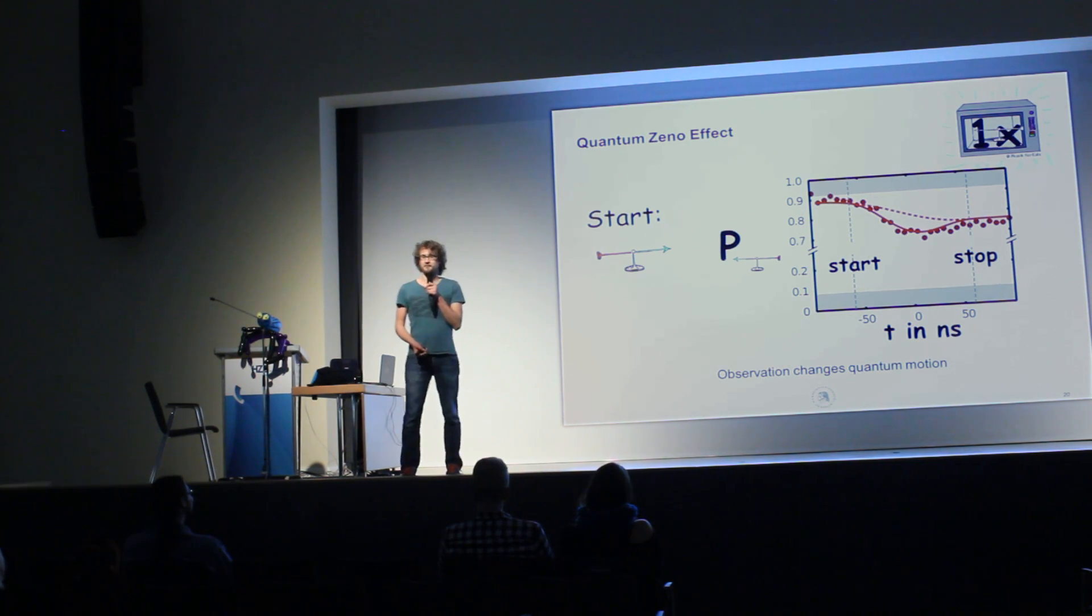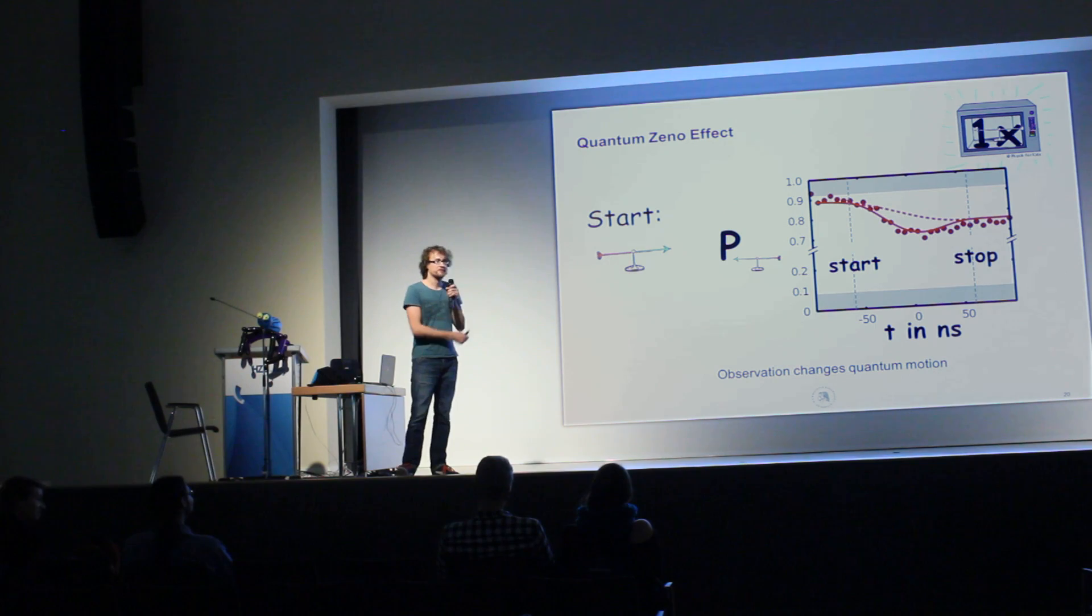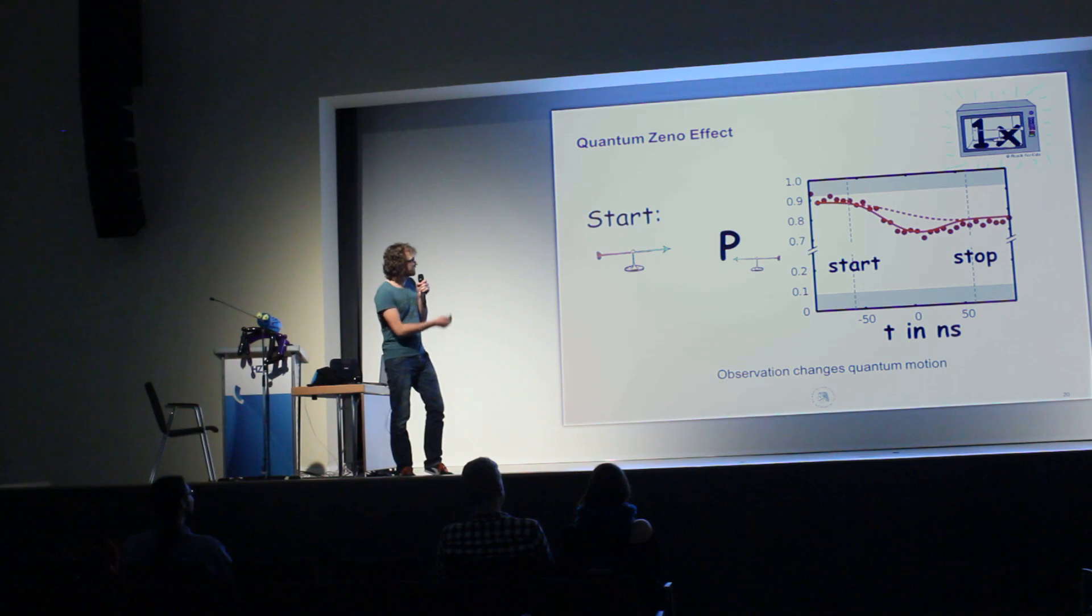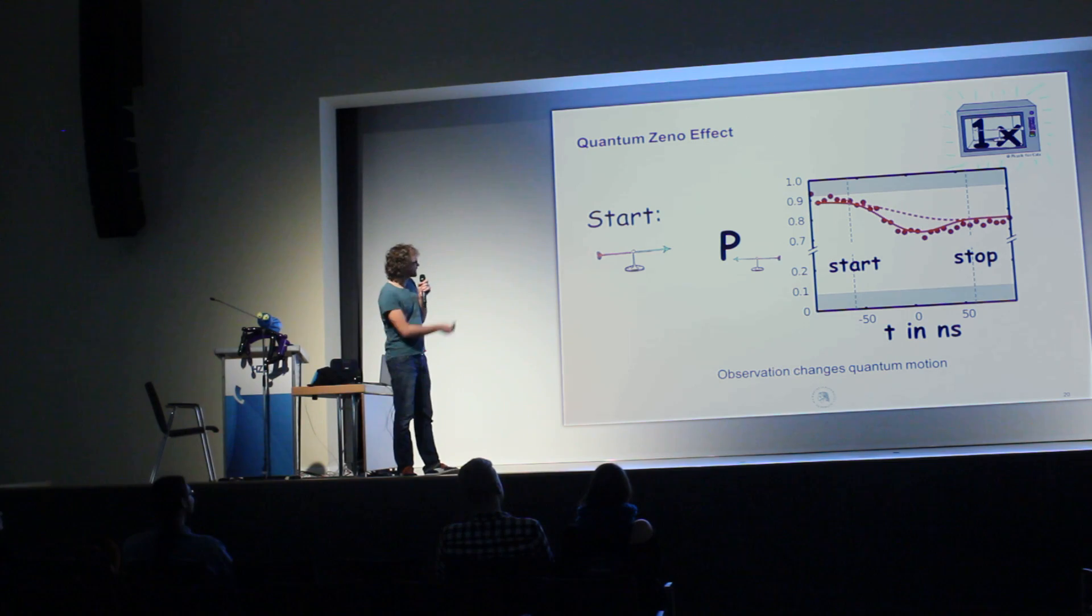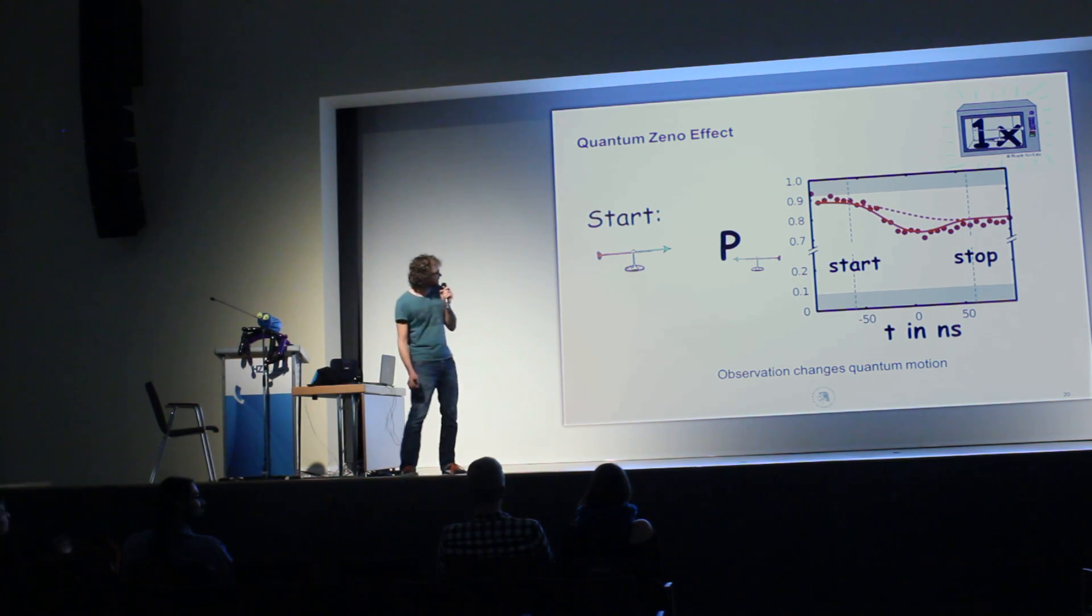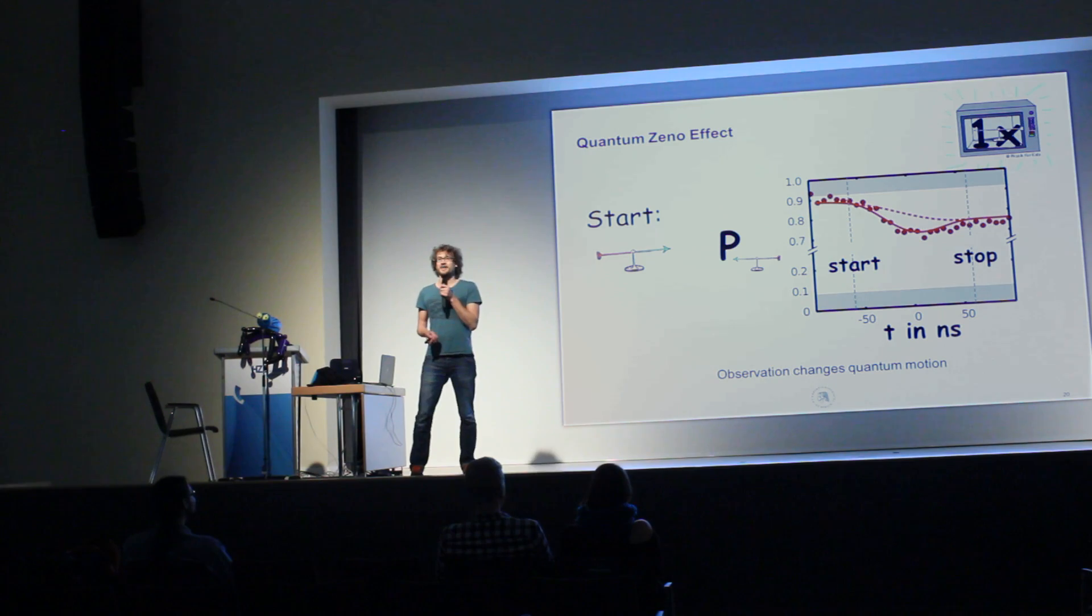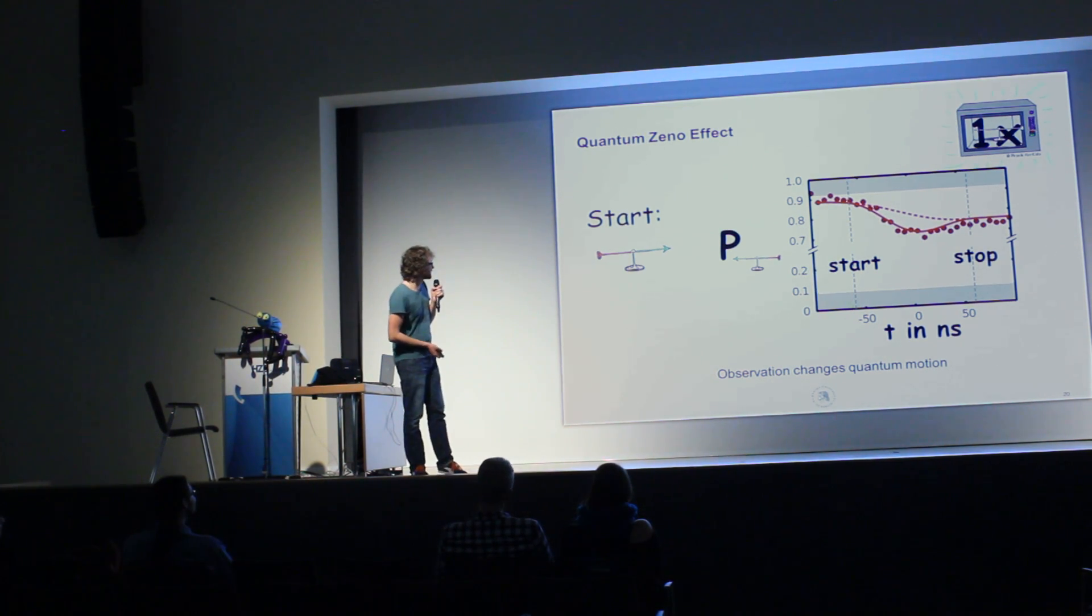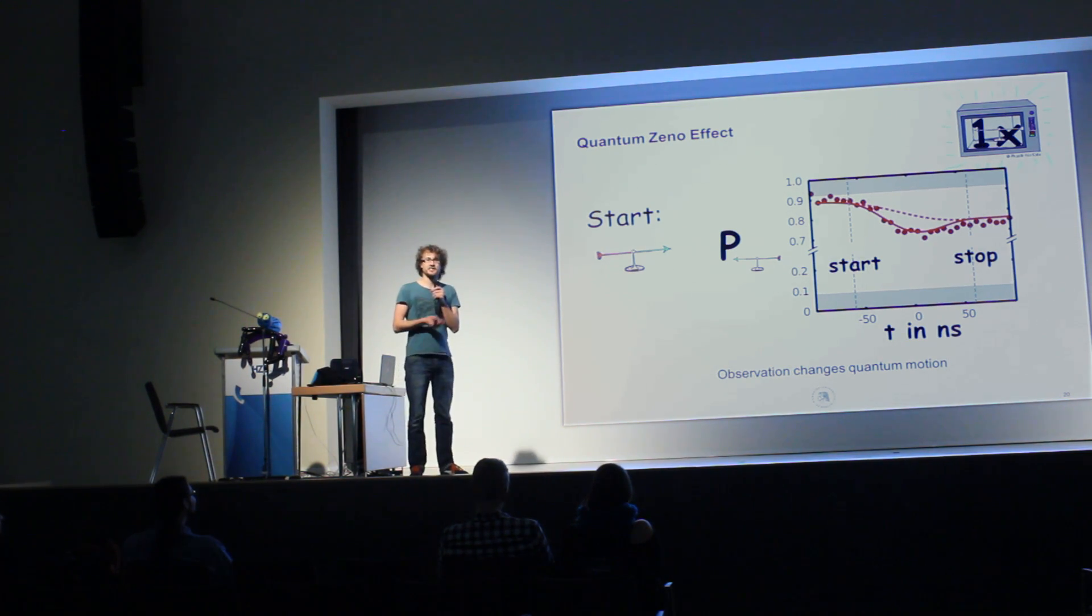They look not as nice as the theory I presented before, but what you can still see is that when you look at the spin before the microwave was turned on, nothing happens more or less, and if you look in the middle of the microwave pulse, then the probability for a spin flip is highly reduced, and then if you look at later times it's not that much reduced. But if you look at the dots, these are measured data, the solid line is a theory which perfectly fits into this, and the dashed line is a theory without quantum Zeno effect. So we can say, there's a quantum Zeno effect, and in the quantum world, the observation of an object indeed changes its motion.